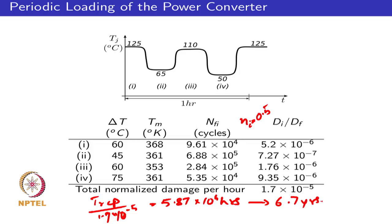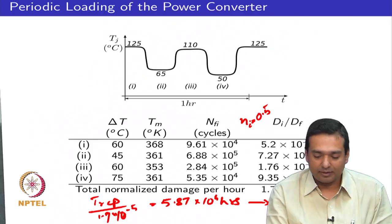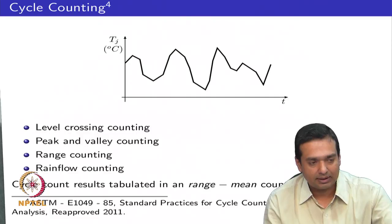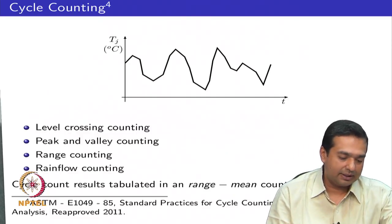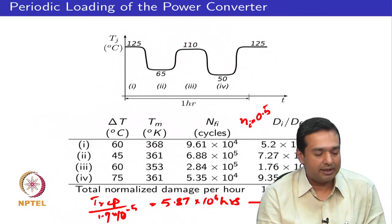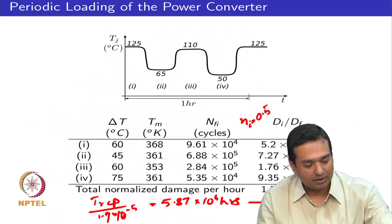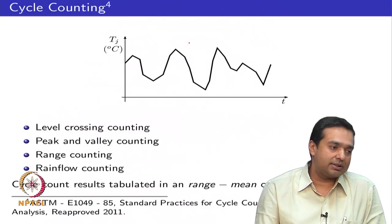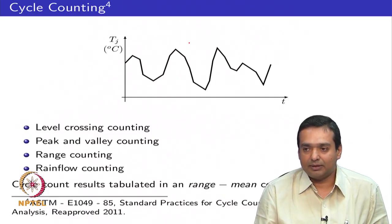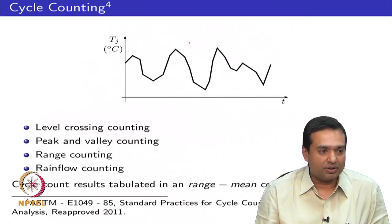The expected lifetime is T_rep divided by total normalized damage per period: 1 hour / (1.7×10⁻⁵) = 5.87×10⁴ hours, which converts to approximately 6.7 years. In practice, a wind turbine would have a much more complex junction temperature waveform over many months of data, requiring explicit methods to count cycles.